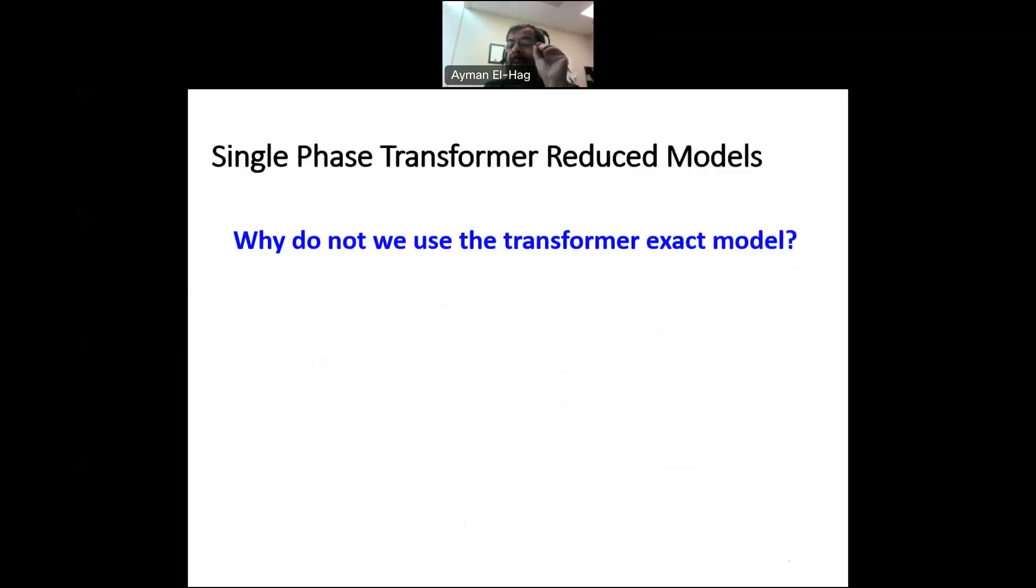Now, this exact model, we don't use it much, actually. In many practical applications, we don't use it. Why is that? First of all, and we will see that in a coming video, that when we do the measurement to find these components of the transformer, we cannot find the exact model. We find a reduced model that we'll talk about it in a few minutes. So that is the first reason, that practically we cannot, or it's extremely difficult to measure the exact components. We only can measure a reduced model.